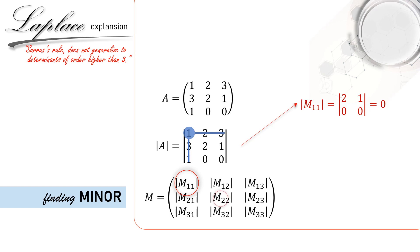Another minor, M22, is obtained by deleting row 2 and column 2 in determinant A. So we have M22 here equals minus 3. And lastly, with similar process for M33, we get M33 equals minus 4.